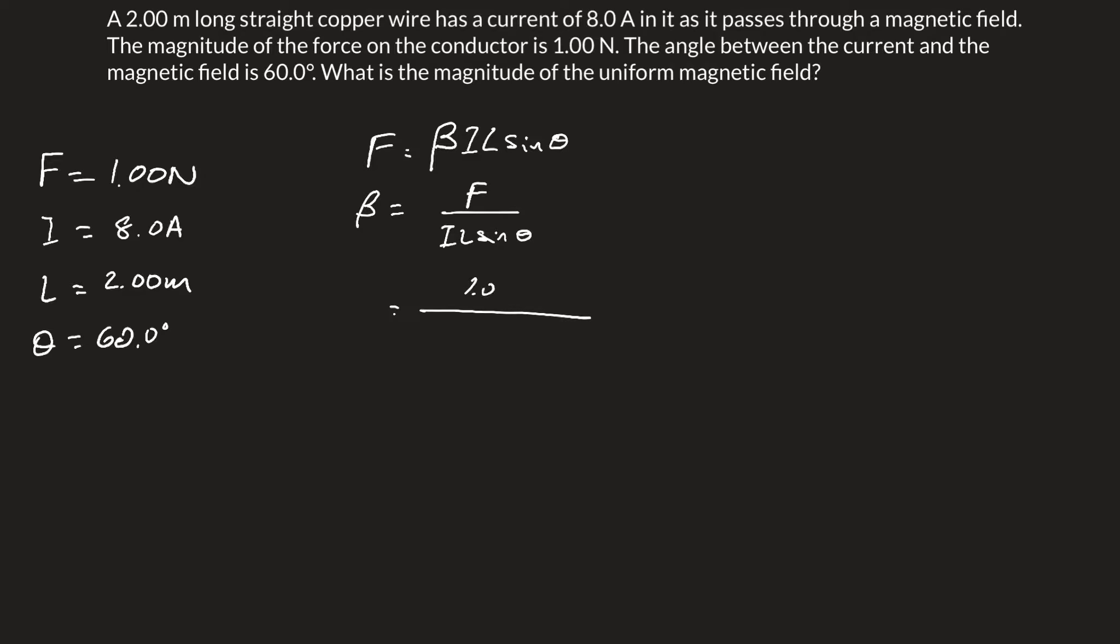We are then left with 1.00 newtons divided by 8.0 amps times 2.00 meters times sine of 60 degrees.